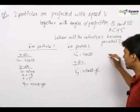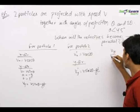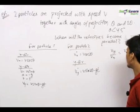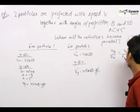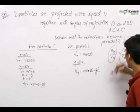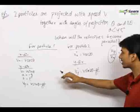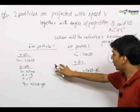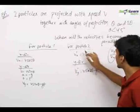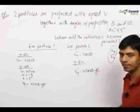Now what we need to imply here is that vy upon vx will be equal to vy dash upon vx dash. If this happens, the tan of the angles which the velocity vectors make at that point will be same for both the particles, which will mean the direction will be same and the velocities will become parallel.